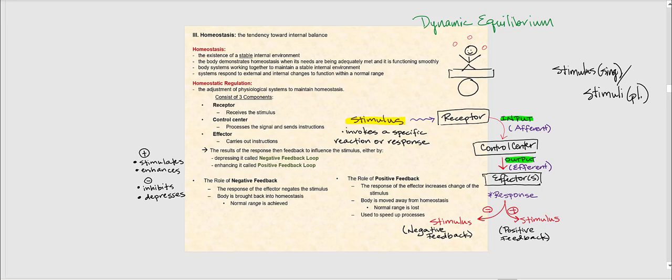Let's now discuss homeostasis, which is the tendency towards internal balance. Homeostasis is the existence of a stable internal environment. The body demonstrates homeostasis when its needs are being adequately met and it's functioning smoothly — in other words, that we're healthy. The fact that we're healthy and free of any diseases means homeostasis is working: we have the existence of a stable internal environment.